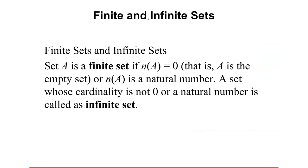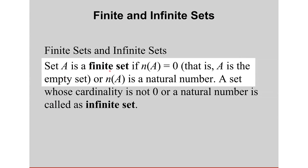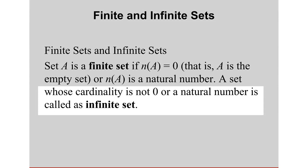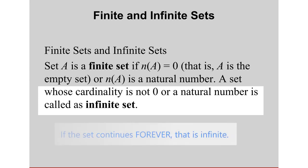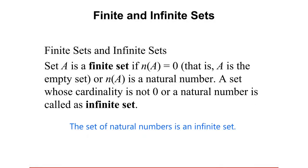Let's define finite and infinite sets. A set is called a finite set if its cardinality is either 0 or a natural number. If cardinality is 0, the set is an empty set. A set whose cardinality is not 0 or a natural number is called an infinite set — if you cannot count the number of elements, or if the set continues forever without end. For example, the set of natural numbers is an infinite set because it continues without end.